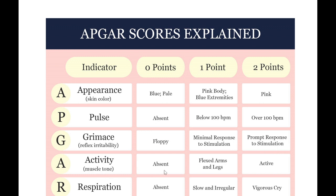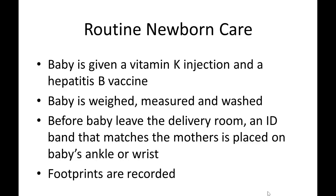Activity is checked as follows: absent is 0; flexed arms and legs scores 1 or 2; if the baby is completely active, it is a good sign. For respiration: absent is 0; slow and irregular breathing is 1; a vigorous cry scores 2, meaning the baby is quite active and doing well.